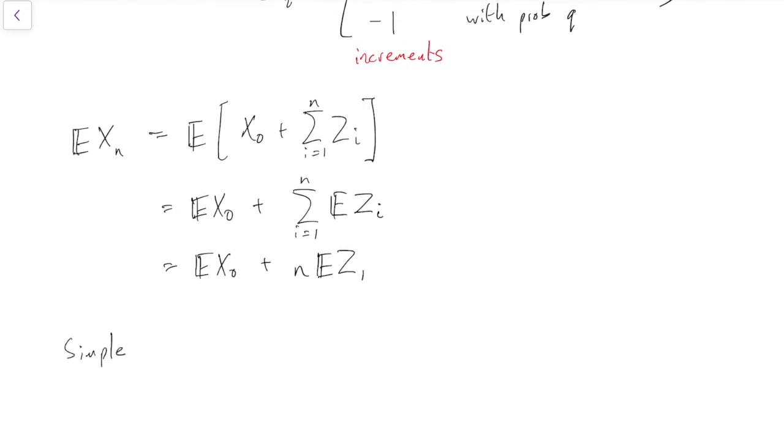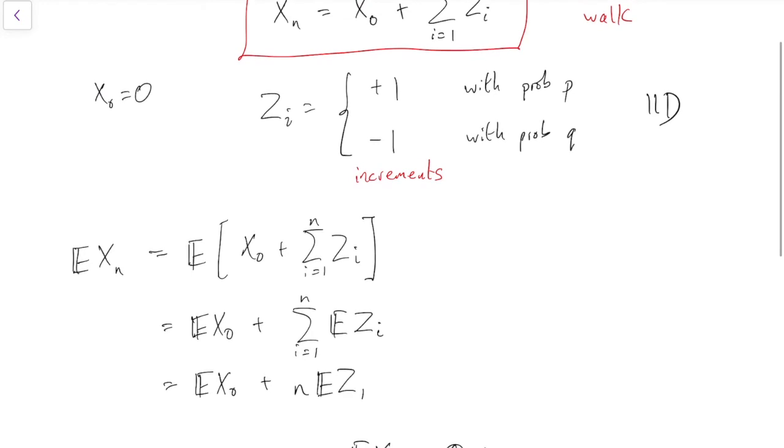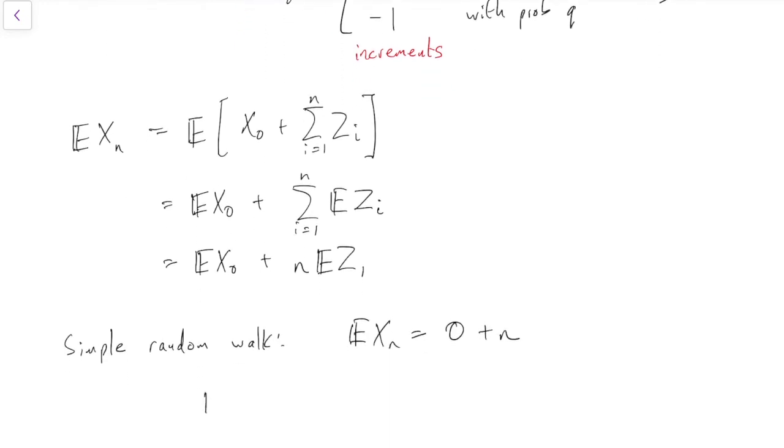In the special case of the simple random walk, what can we say then? We can say the expected value of Xn is, well, the expected value of X0 for the simple random walk, we always start from 0. So that expectation is 0, plus n lots of what's the expectation of Zi? This Zi for the random walk. Well, the expected Zi is we go up 1 with probability p, that's p times 1, but we go down 1 with probability q, so that's q times minus 1, and that's p minus q. So we get n(p minus q).